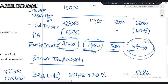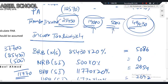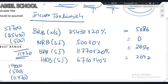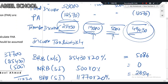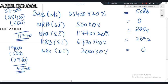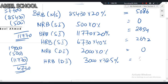Moving to dividend income: every individual gets a nil rate band of £2,000 for dividends, irrespective of tax-paying status, at 0%. From the £5,000 dividend, deduct £2,000; the remaining £3,000 falls in the higher rate band for dividends at 32.5%, giving £975.